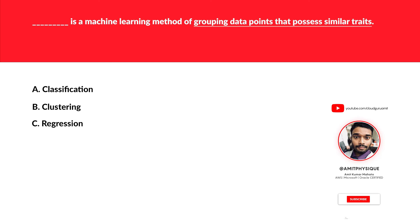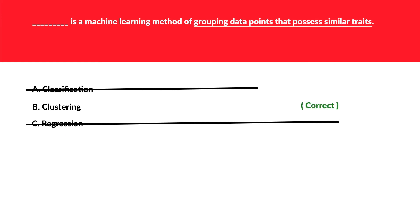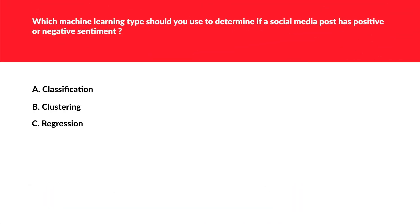This question is about machine learning methods. The keywords are 'grouping of data points that possess similar traits.' Classification groups data into yes/no or certain categories, so it is not the answer here. Clustering groups data points based on similar traits, so this is the potential answer. Regression is for predicting, so that is also wrong. We are left with clustering — and Azure has K-means clustering — so this is the correct option.